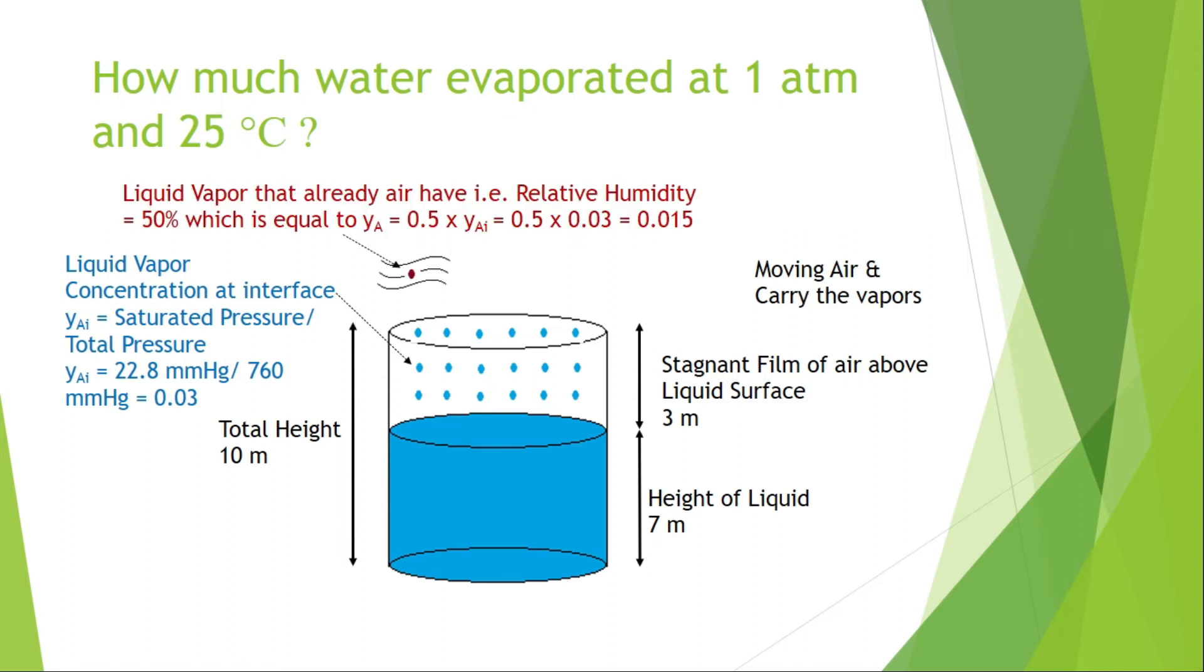Assume air has a relative humidity of 50%. Then the concentration of liquid vapor in the air is calculated by multiplying concentration at interface with relative humidity. That is, y_A equals 0.015.